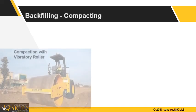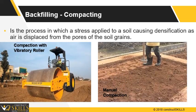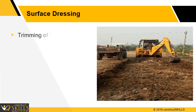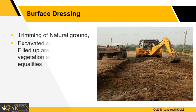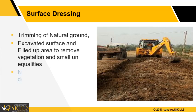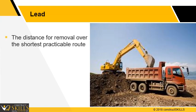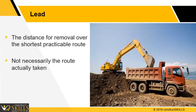Compacting is the process in which stress is applied to soil causing densification as air is displaced from the pores of the soil grains. Dressing: Trimming of natural ground, excavated surface and filled-up area to remove vegetation or small inequalities not exceeding 300 mm deep is known as surface dressing and it is measured in square meters. Lead: The distance for removal shall be measured over the shortest practicable route, and not necessarily the route actually taken, which is known as lead. It is measured in meters or kilometers depending upon the total distance.